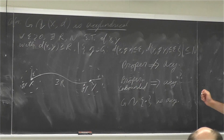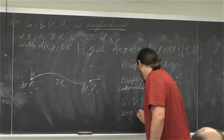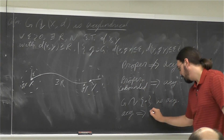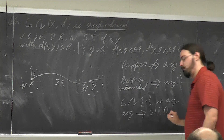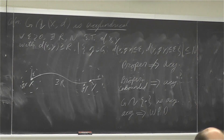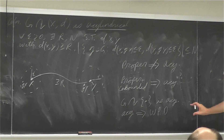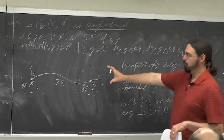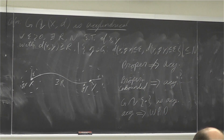One thing I'll mention for specialists: every acylindrical action satisfies the Bestvina-Fujiwara WPD condition. So acylindrical actions are weakly properly discontinuous in the sense of Bestvina-Fujiwara. This is really very similar to this definition with some more restrictions on the points X and Y.